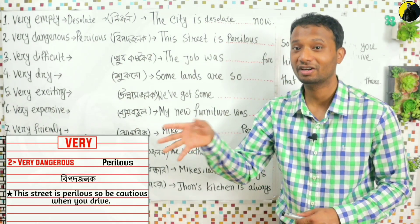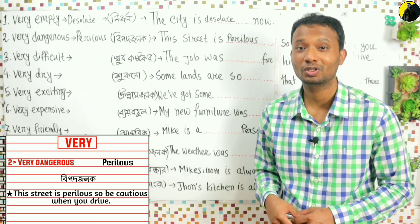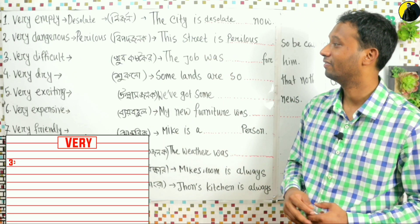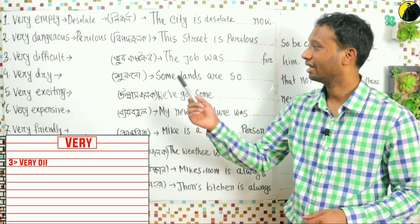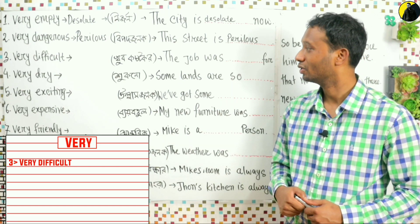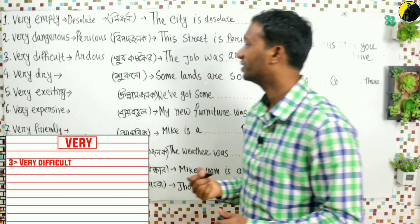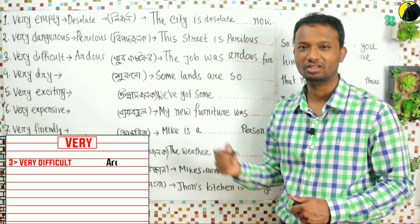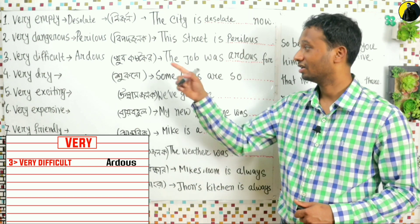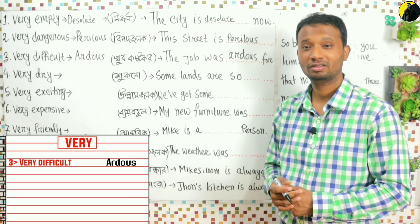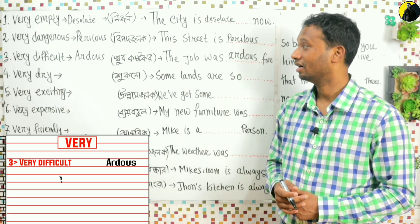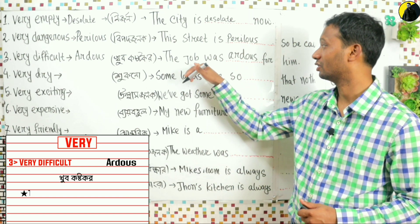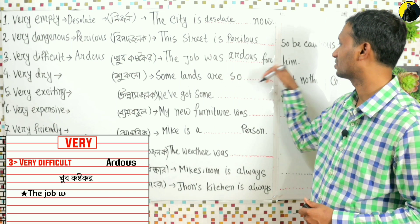Cautious — the advanced synonym for 'very careful' is 'cautious'. Okay, third one: very difficult. The advanced synonym is: arduous. A-R-D-O-U-S. Very difficult, very hard — arduous. For example: 'The job was arduous for him.'